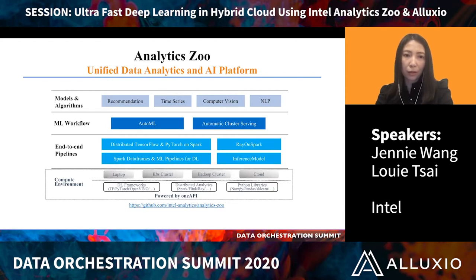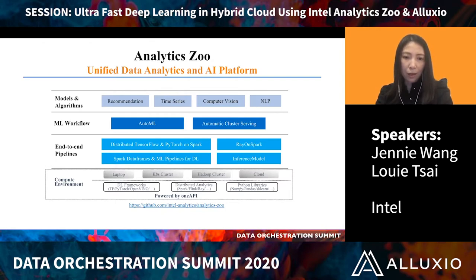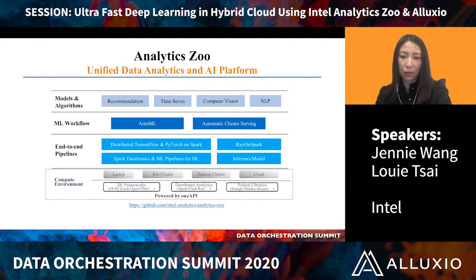Analytics Zoo is a unified data analytics and AI platform. At the bottom, it supports various compute environments like the laptop, Kubernetes cluster, Hadoop cluster, and cloud. It supports major deep learning frameworks like TensorFlow, PyTorch, and BigDL. And it supports popular distributed analytics systems like Spark, Flink, and Ray. It also supports popular Python libraries like NumPy and Pandas.